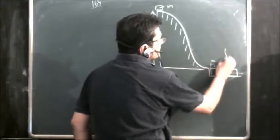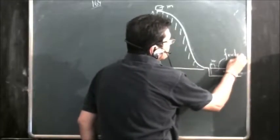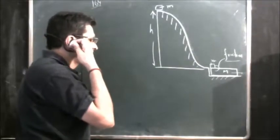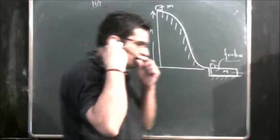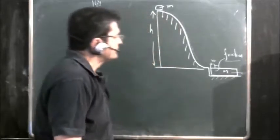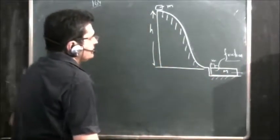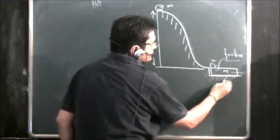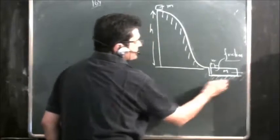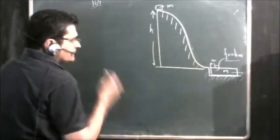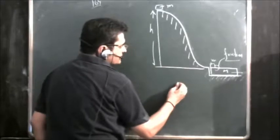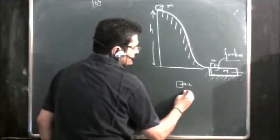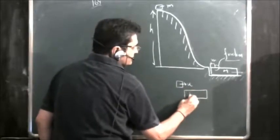The plank can slide on the surface without friction, but there is friction between the disc and the plank. We have to find the work done by the frictional force on the mass. When these two bodies contact each other, the small mass is moving with velocity u and the capital M plank is at rest.